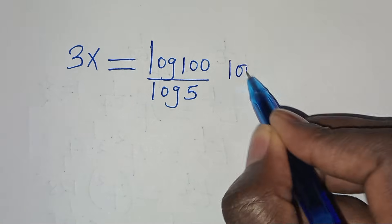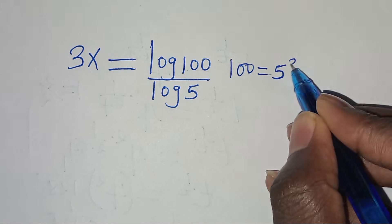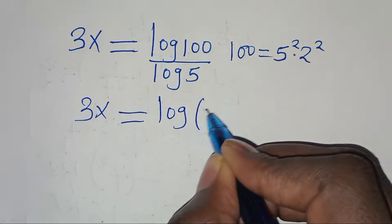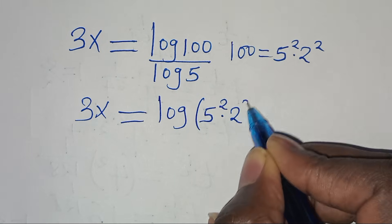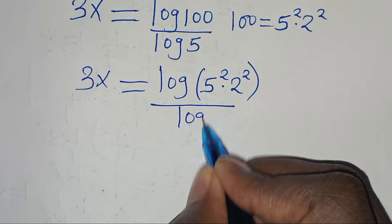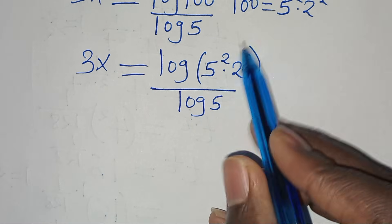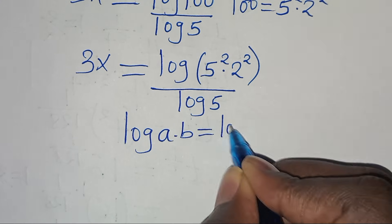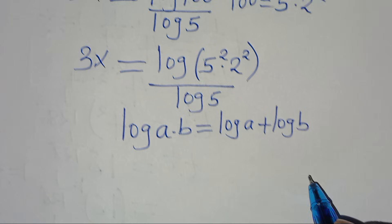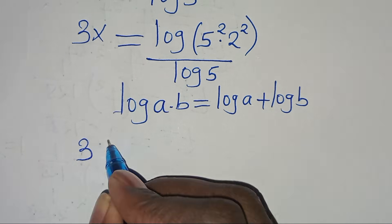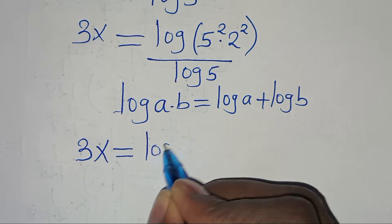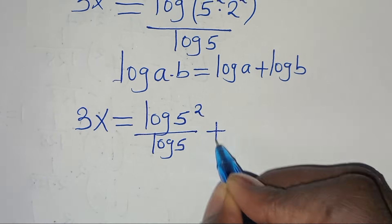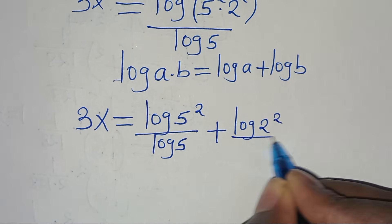We can express 100 as 5² × 2², so 3x = log(5² × 2²) / log(5). Since log(a×b) = log(a) + log(b), this becomes 3x = log(5²)/log(5) + log(2²)/log(5).